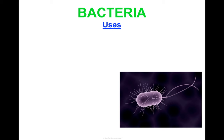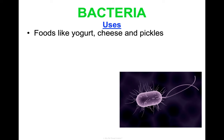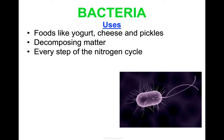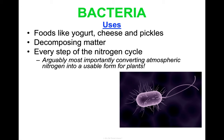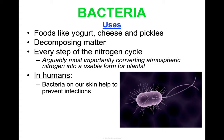Bacteria do so much more than just act as pathogens — remember, only 1% of bacteria are pathogens. Foods like yogurt, cheese, and pickles involve bacteria. Matter decomposition is another role, and really the nitrogen cycle is run by bacteria. Every step of the nitrogen cycle has bacteria playing a part. The most important part is how bacteria make it possible to convert atmospheric nitrogen — elemental nitrogen — into a form that's actually usable by plants, which can absorb it in their roots.